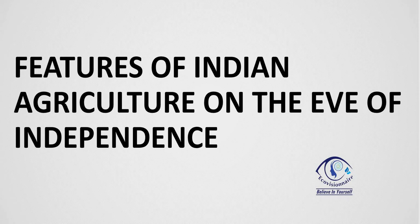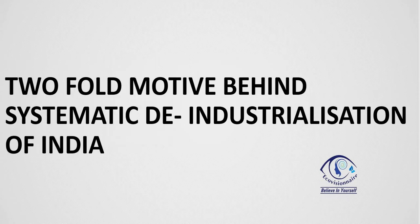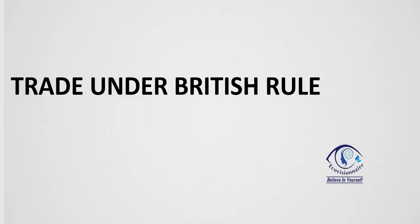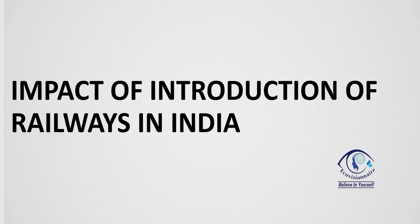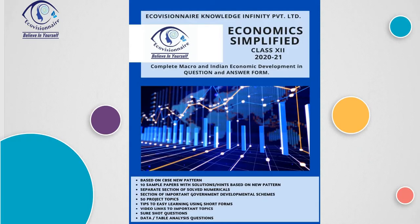Let us revise the five topics you must prepare: first, features of Indian agriculture on the eve of independence; second, the twofold motive of British trade; third, trade under British rule; fourth, demographic profile under British rule; and fifth, the impact of introduction of railways in India.